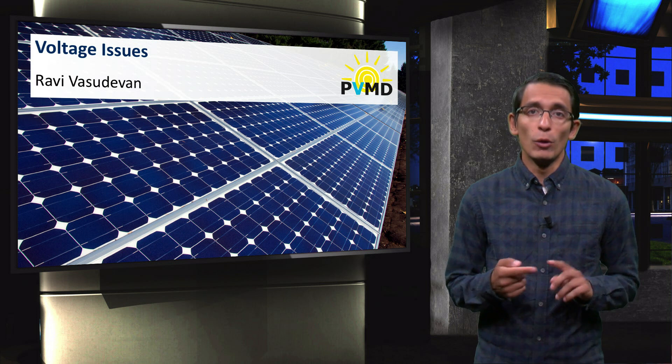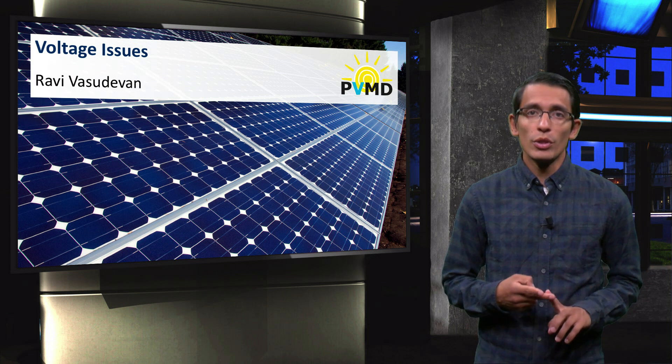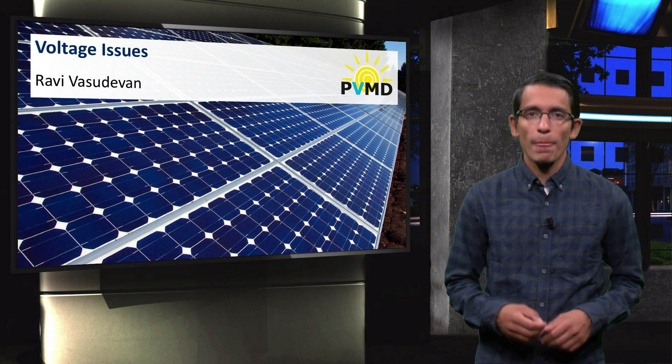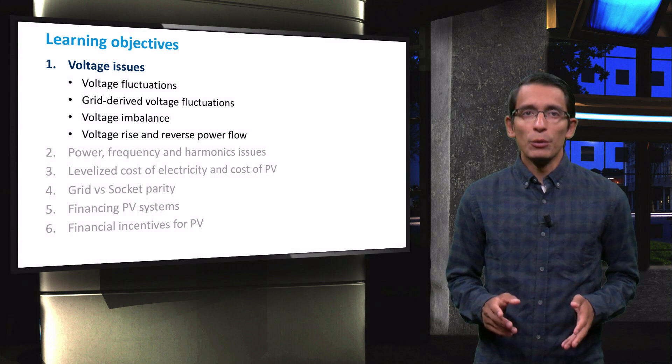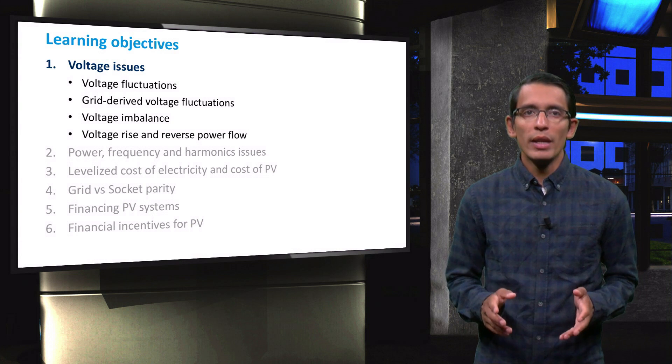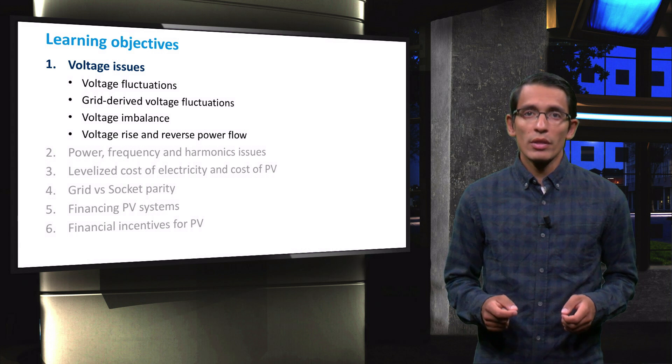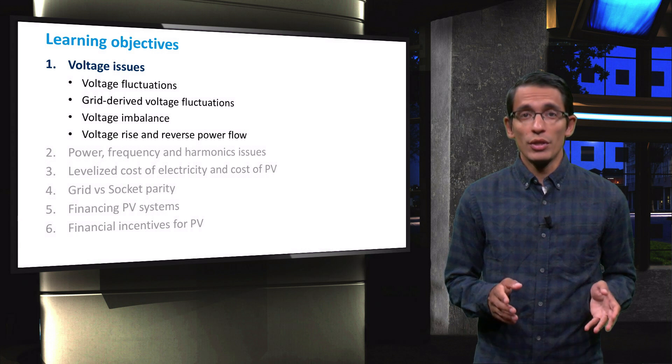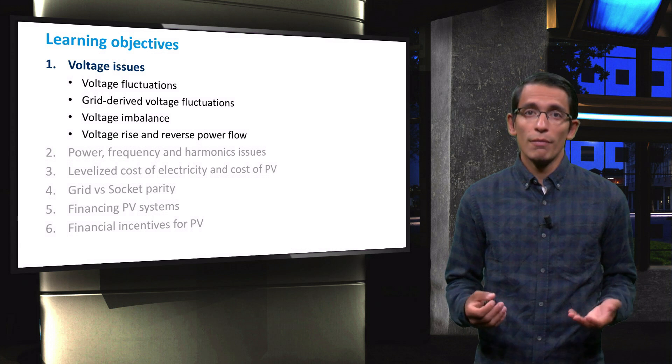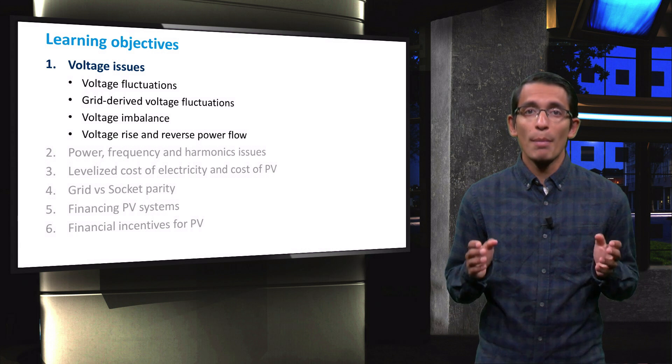The issues can be divided into voltage issues, power issues, and frequency issues. In this video, I will discuss how adding PV to a grid can affect the voltage. This will include voltage fluctuations, grid derived voltage fluctuations, voltage imbalance, voltage rise, and reverse power flow.